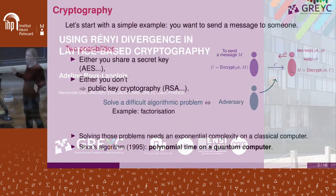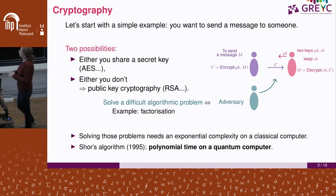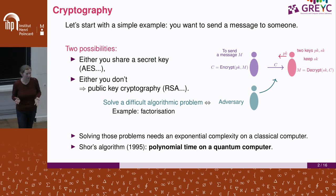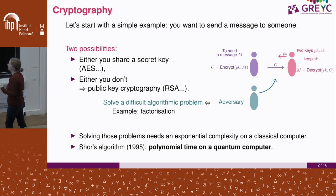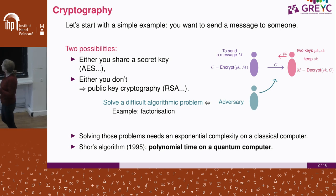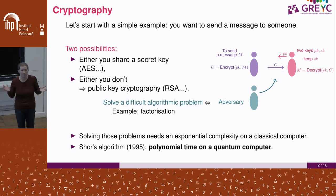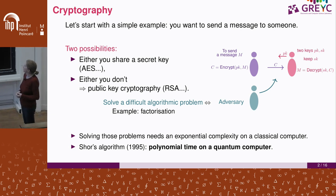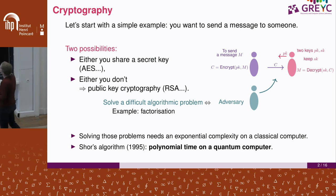You want to send a message to someone. You have two possibilities. Either you already share a secret with the person you want to send a message to. In this case, it's very efficient — it's called symmetric cryptography. You use AES, for example. It's a good choice. And that's not what we will see today.